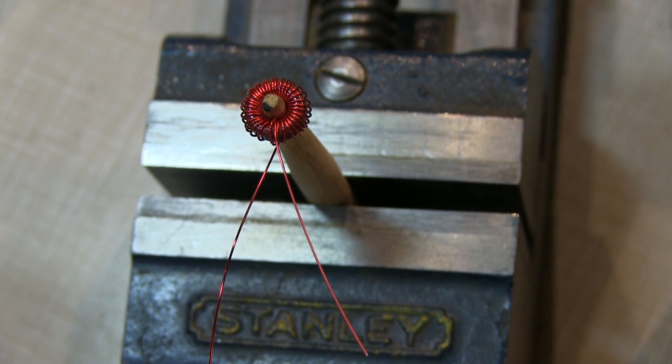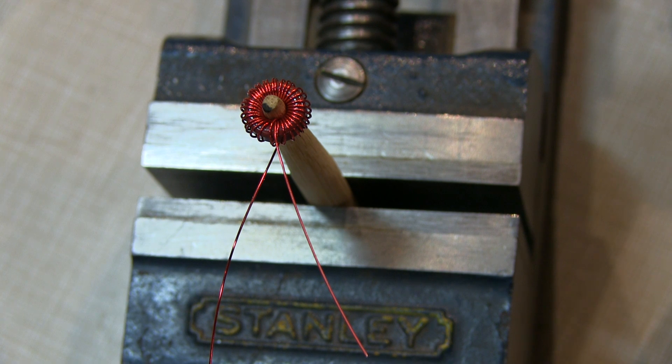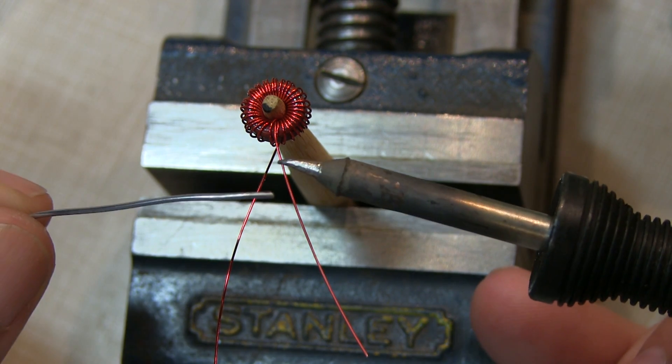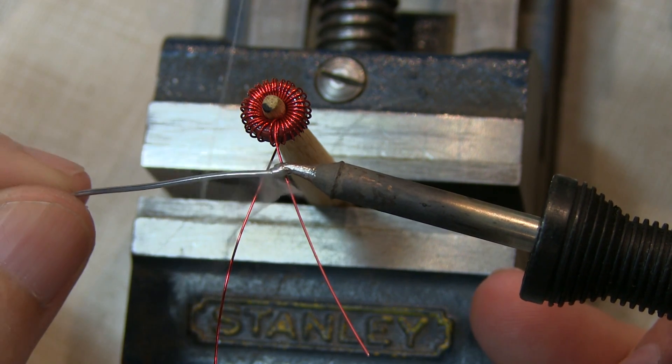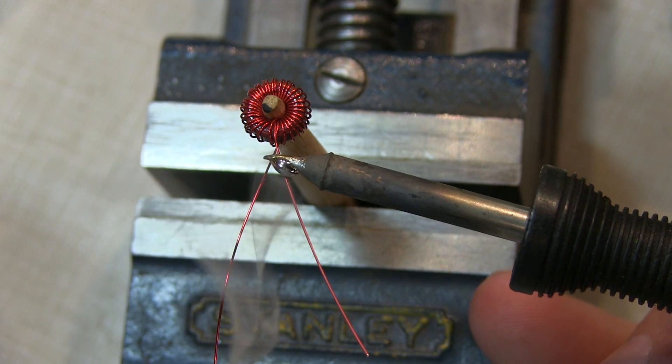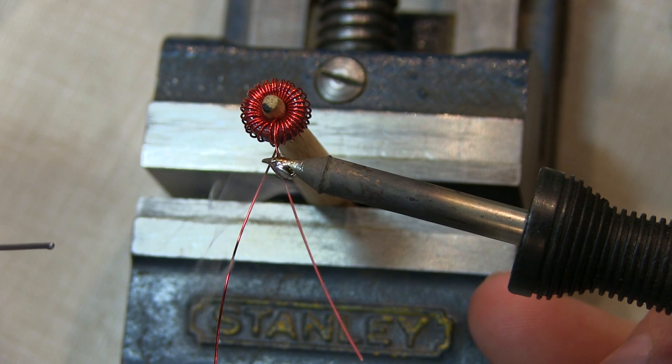And many of these enamel coated wires are heat strippable and you can heat them up with a flame of some sort and just sand the ash away or often times you can even just bury the wire in a ball of solder and that's what I like doing here.